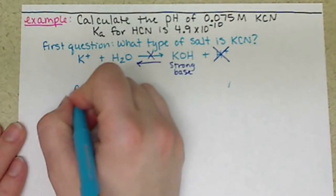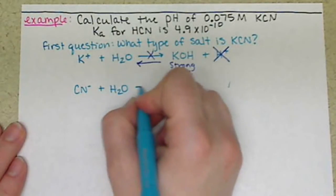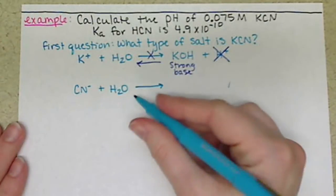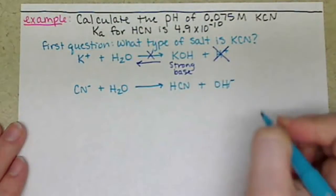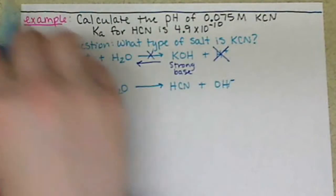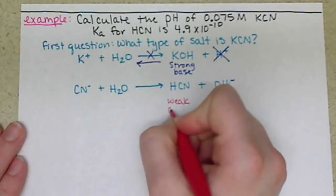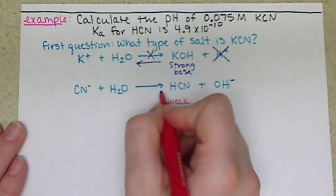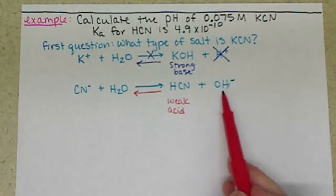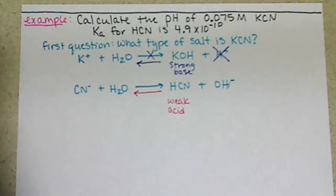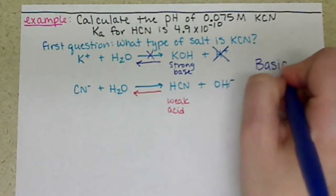If we look at CN- interacting with water, it's going to kick out OH-, so we'll have HCN plus OH-. HCN is a weak acid, so in fact we are in equilibrium and we are going to produce OH-. That tells us KCN is a basic salt.